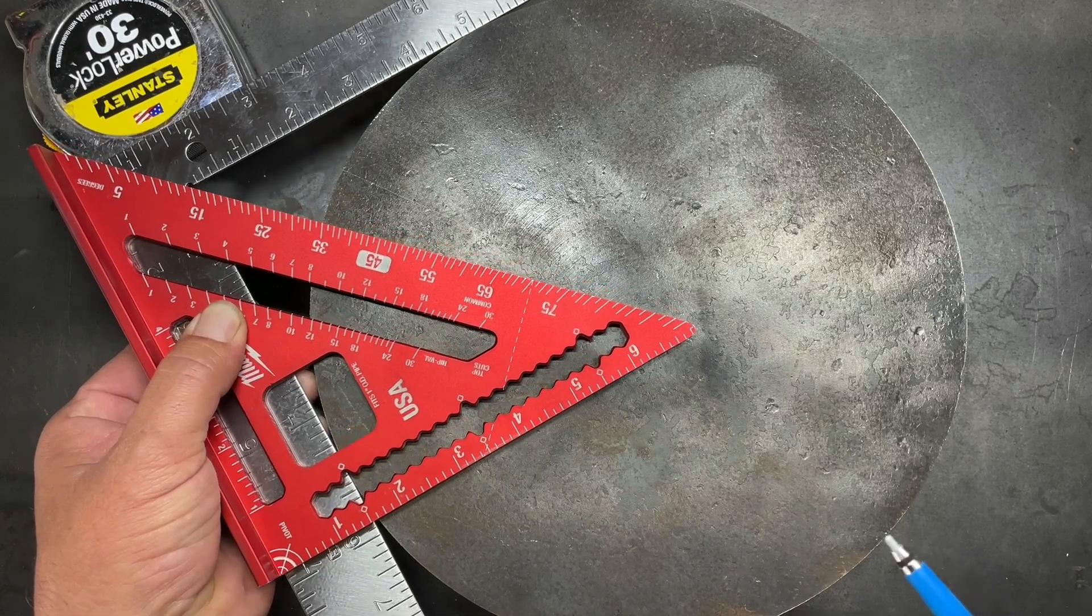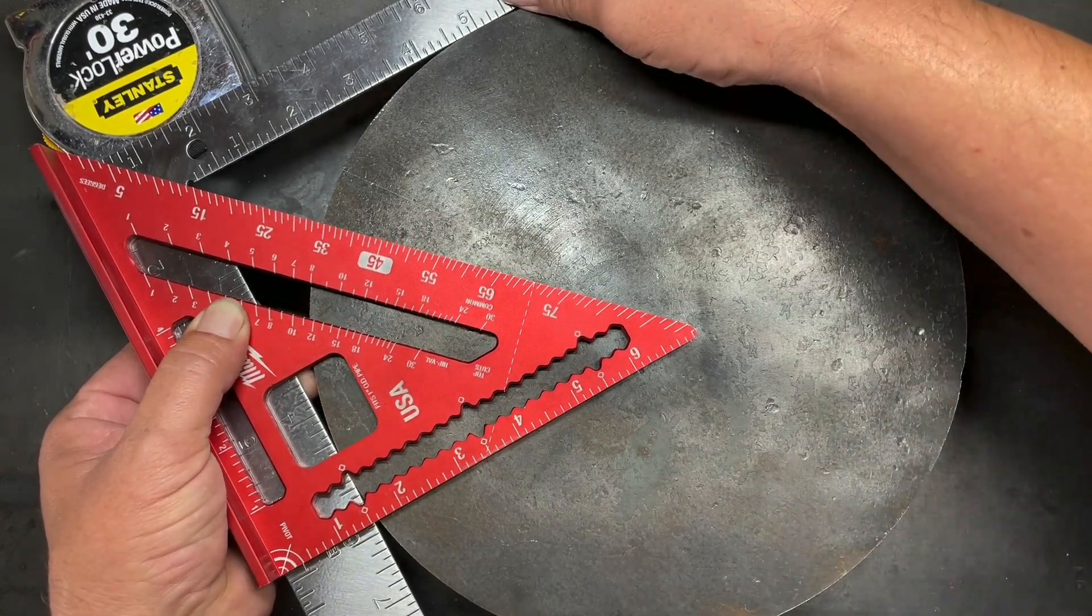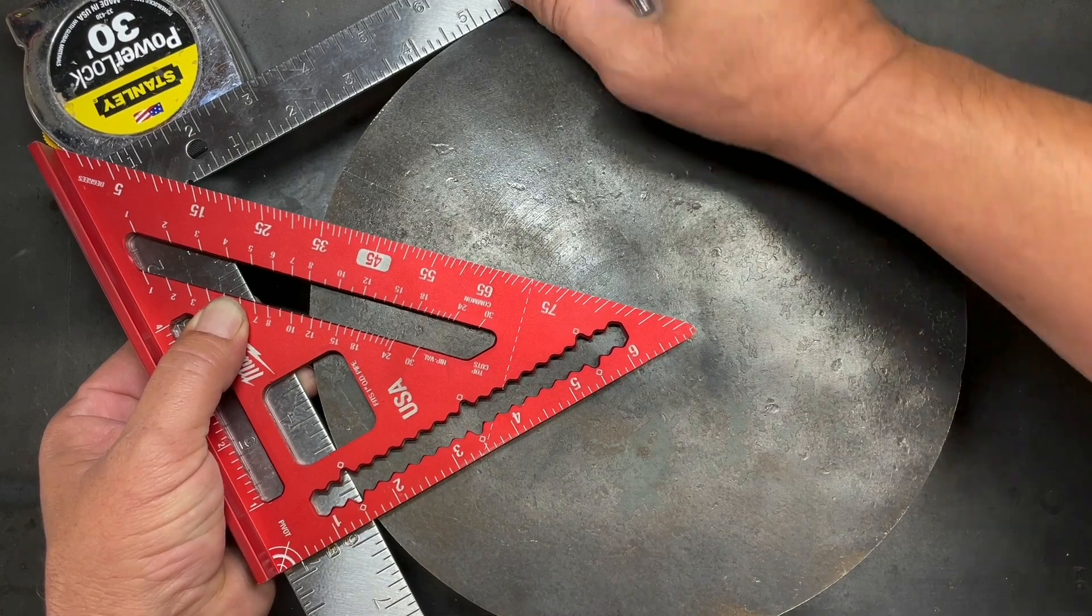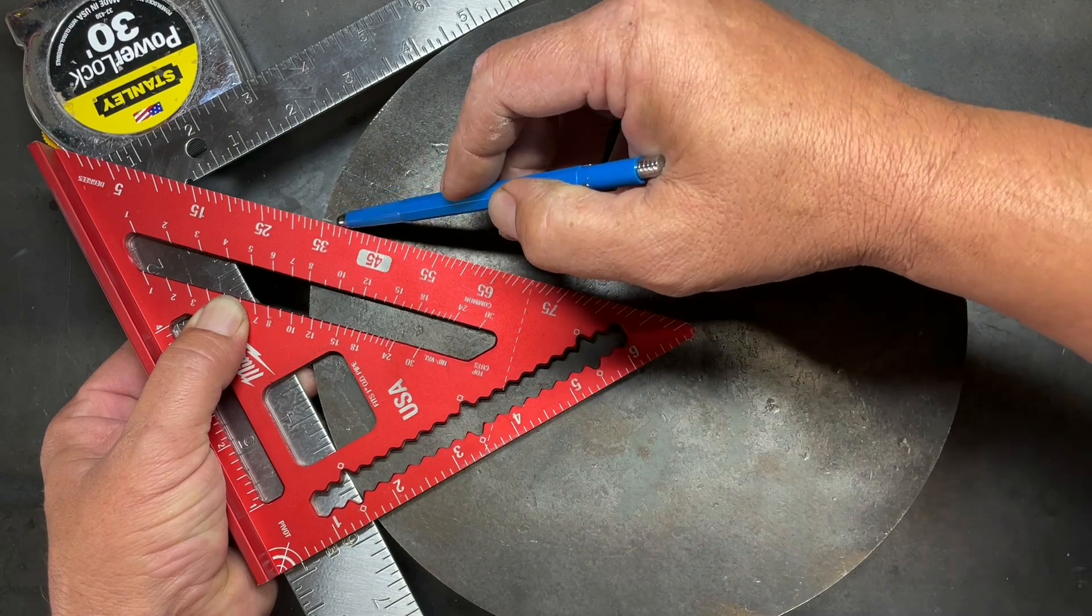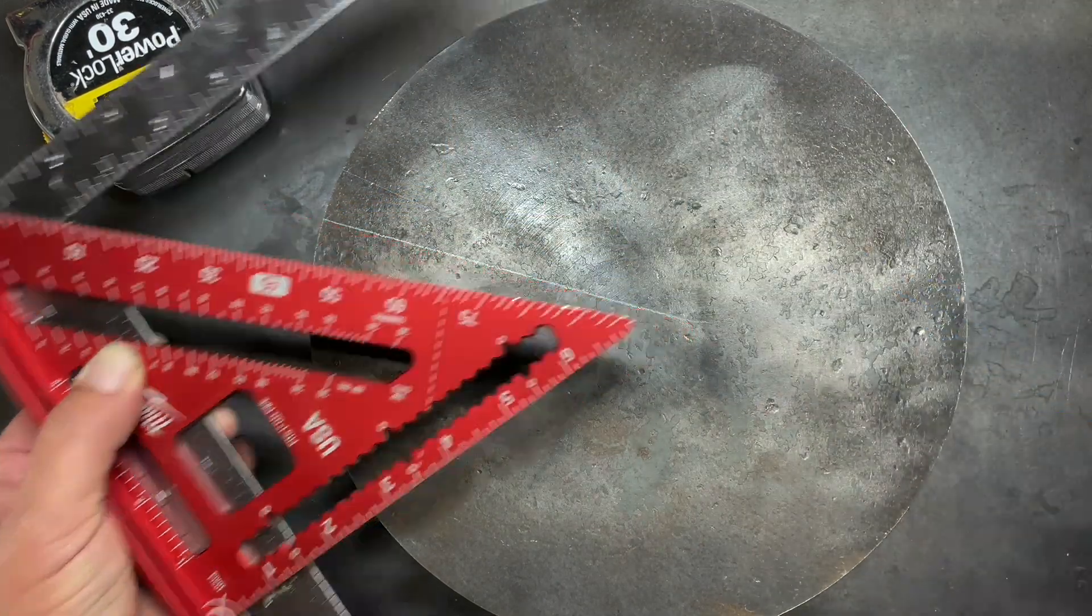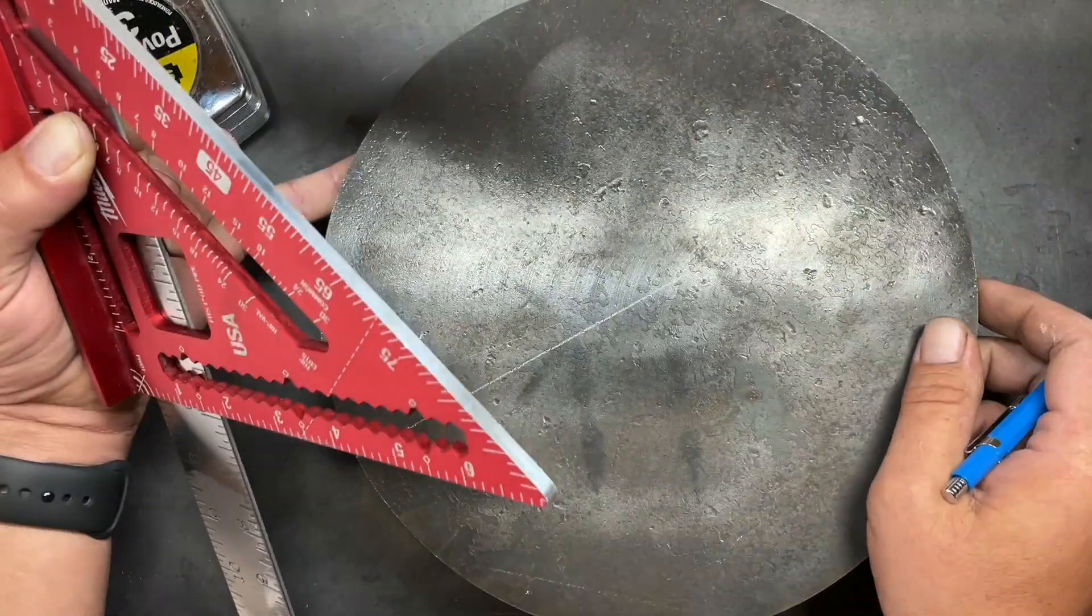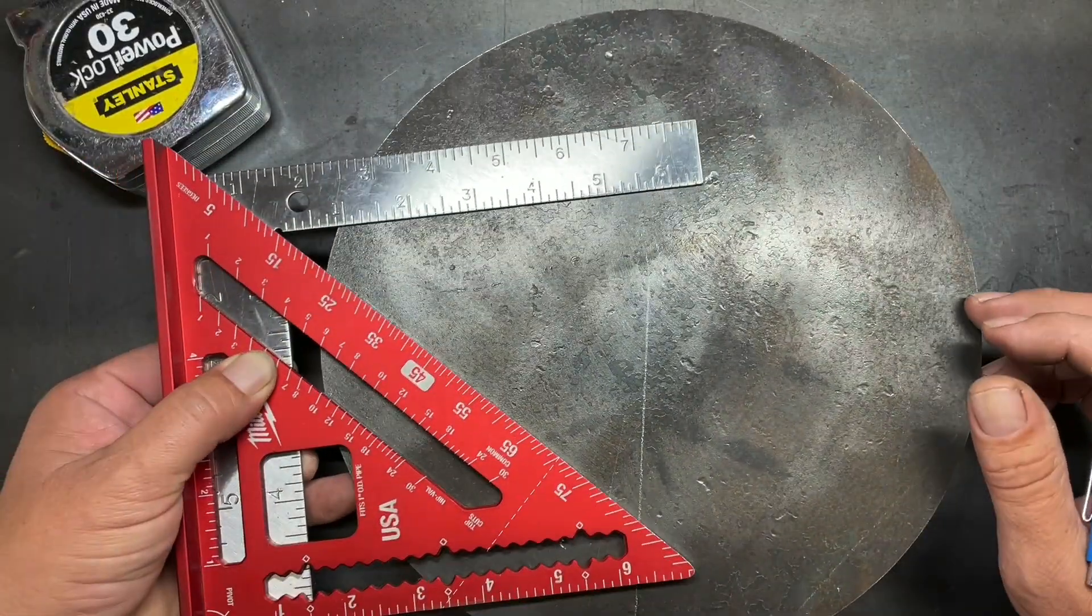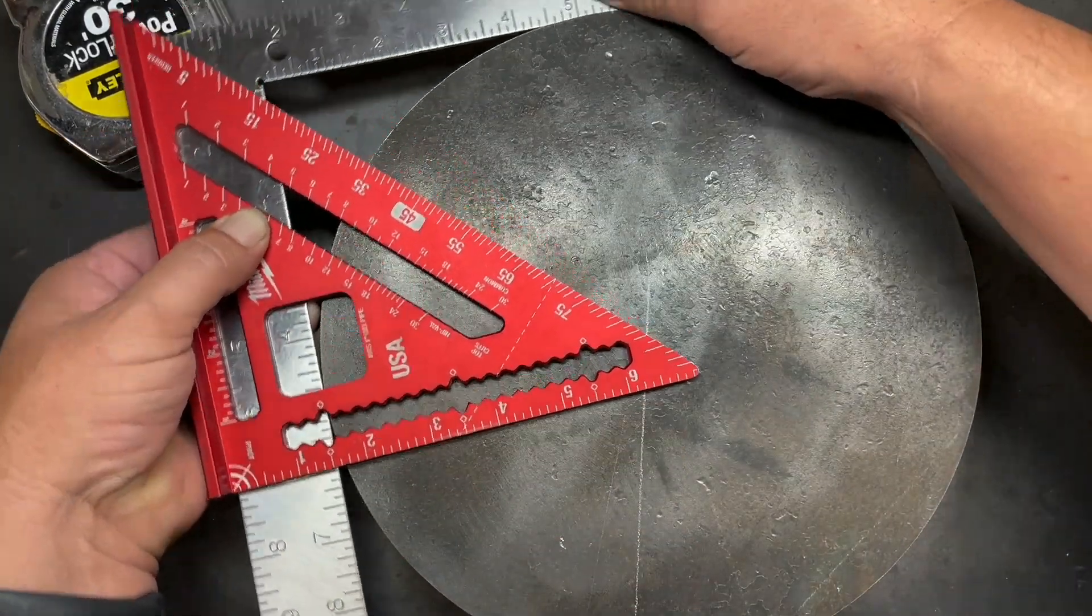Now all we have to do is we just set the framing square on the outside of the circle, and then we'll move this up until we get it perfect. And then we can strike a line down that speed square. Now all we have to do is rotate it one time. For this, you want to come to about the 90 degree position, and we are going to do it one more time.